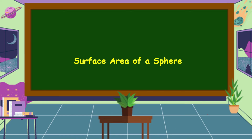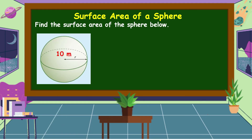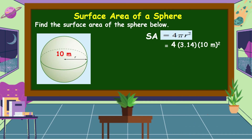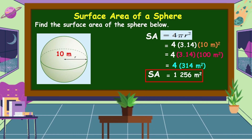The last shape we're going to discuss is the surface area of a sphere. Find the surface area of the sphere below with a radius of 10 meters. The formula is SA = 4πr². Substituting: 4 × 3.14 × (10 m)². Solving: 10 × 10 = 100 m²; 3.14 × 100 = 314 m²; 4 × 314 = 1,256 m². This is the surface area of this sphere.